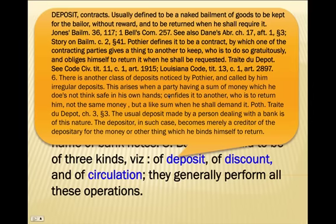For the bailor without reward, to be returned when he shall require it. Pothier defines it as a contract by which one of the contracting parties gives a thing to another to keep, who is to do so gratuitously and obliges himself to return it when requested. There is another class of deposits called by Pothier 'irregular deposits' — this arises when a party having a sum of money confides it to another, who is to return not the same money but a like sum when demanded. The usual deposit made by a person dealing with a bank is of this nature. The depositor in such case becomes merely a creditor of the depository for the money, which he binds himself to return.